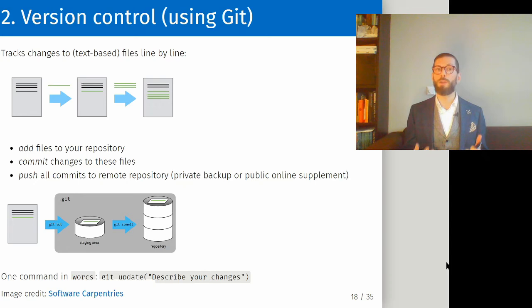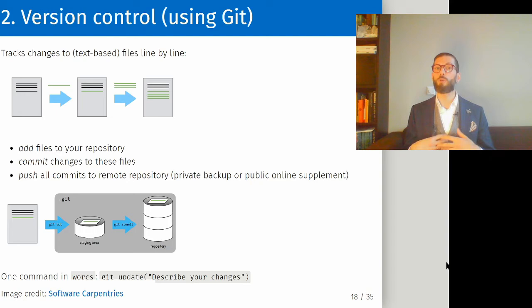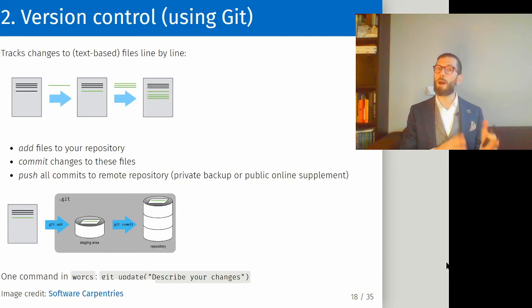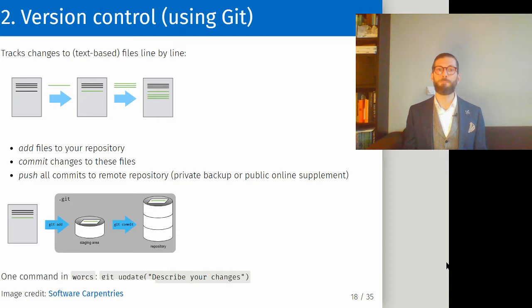Git also facilitates collaboration and experimentation because other people can submit changes and you can go off on a tangent — and if you don't like where you end up, you just go back a few steps in the project history. As you write, Git tracks changes to all text-based files on a line-by-line basis. To save the current state of your project you do three things: add the files to your repository, commit the changes, and push all commits to a remote repository — either a private backup or a public online supplement. The WORCS R implementation integrates all three steps into a single command: git_update, which is basically a quick save for Git.